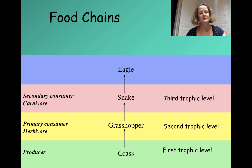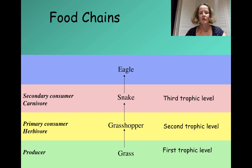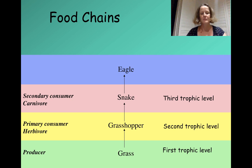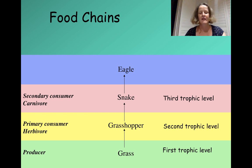Snakes eat grasshoppers, so they are eating animal matter, which makes them carnivores. They are secondary consumers — the second consumers of the organic molecules made by the producers — and they are at the third trophic level, the third feeding level in this food chain.